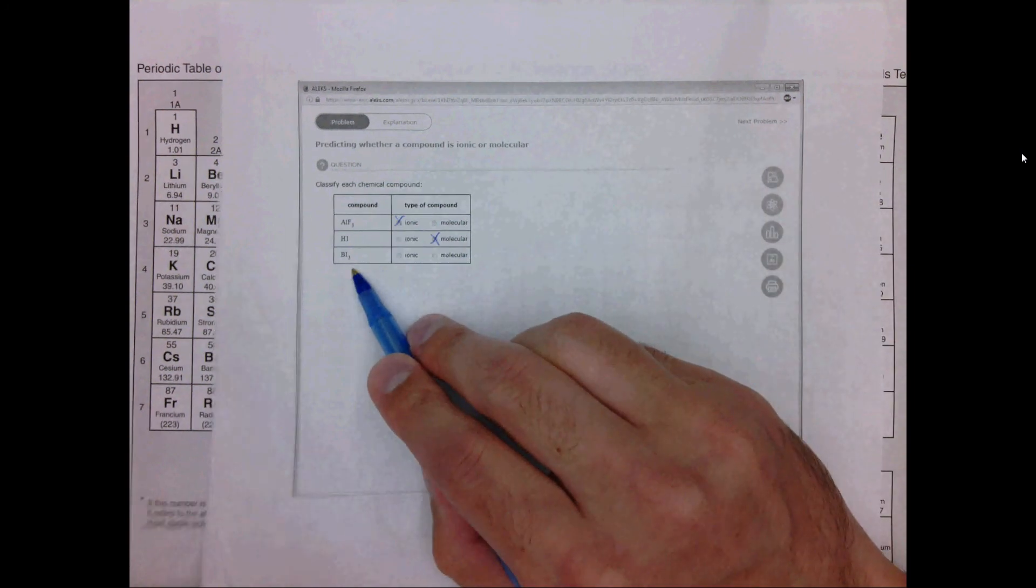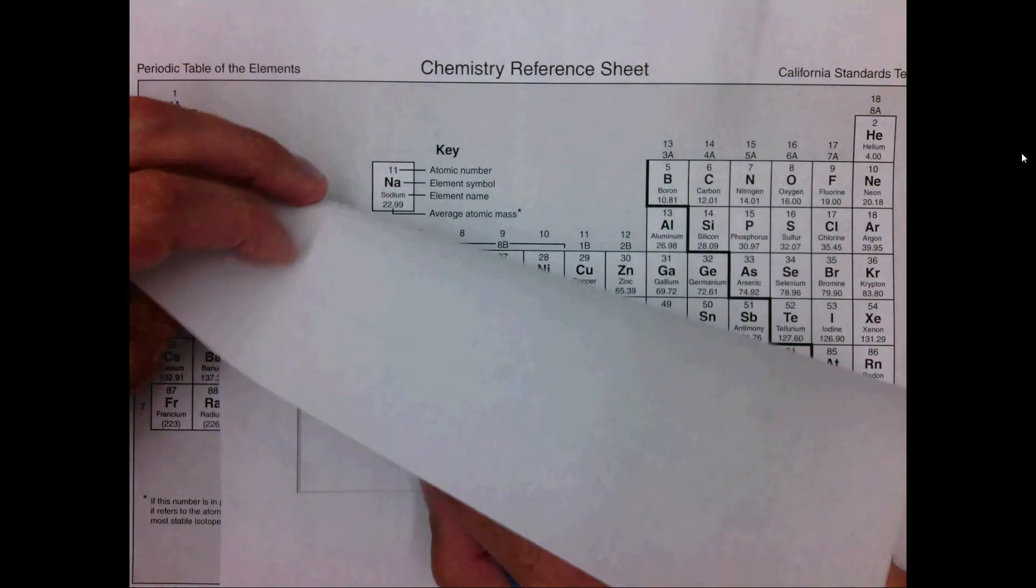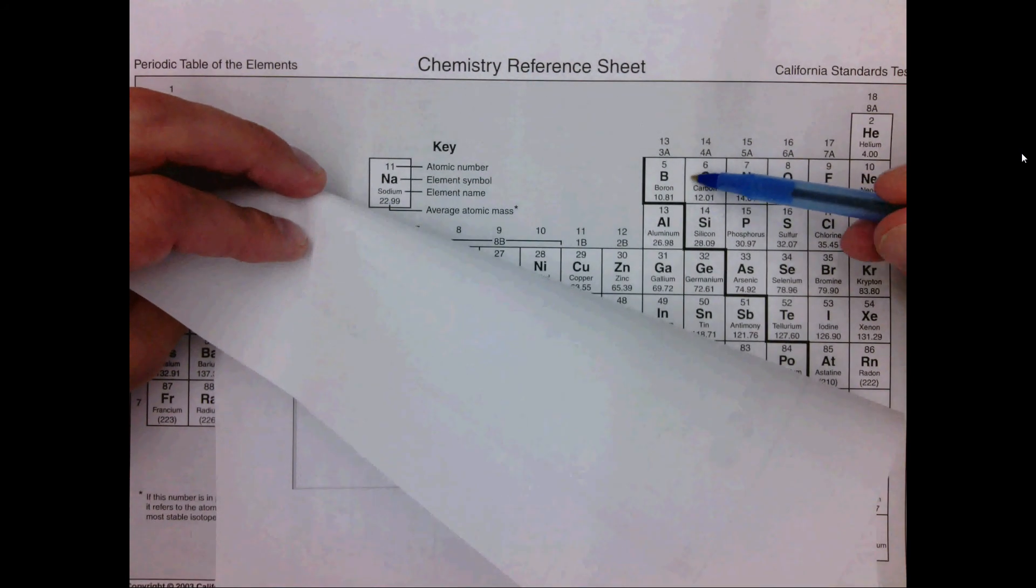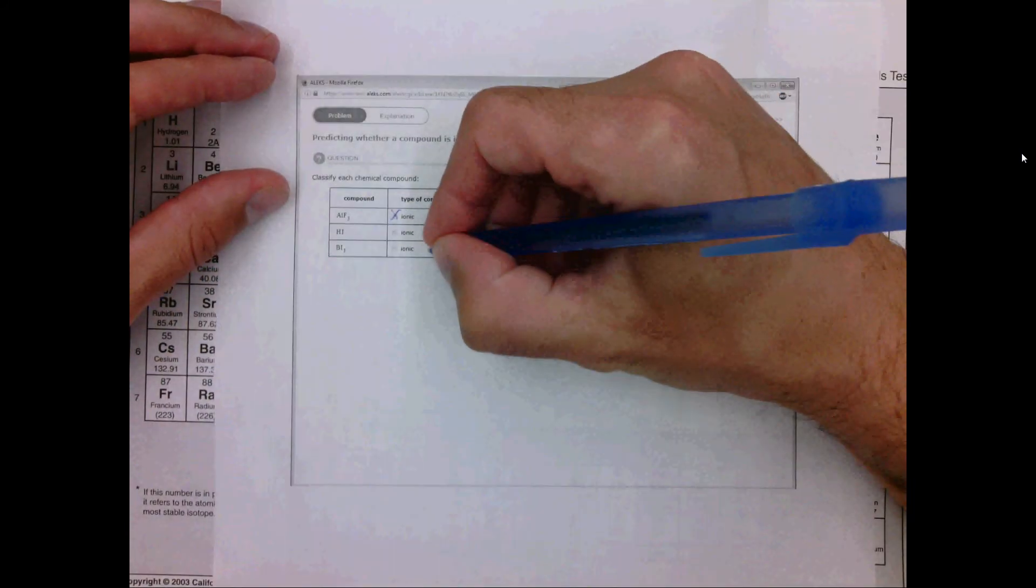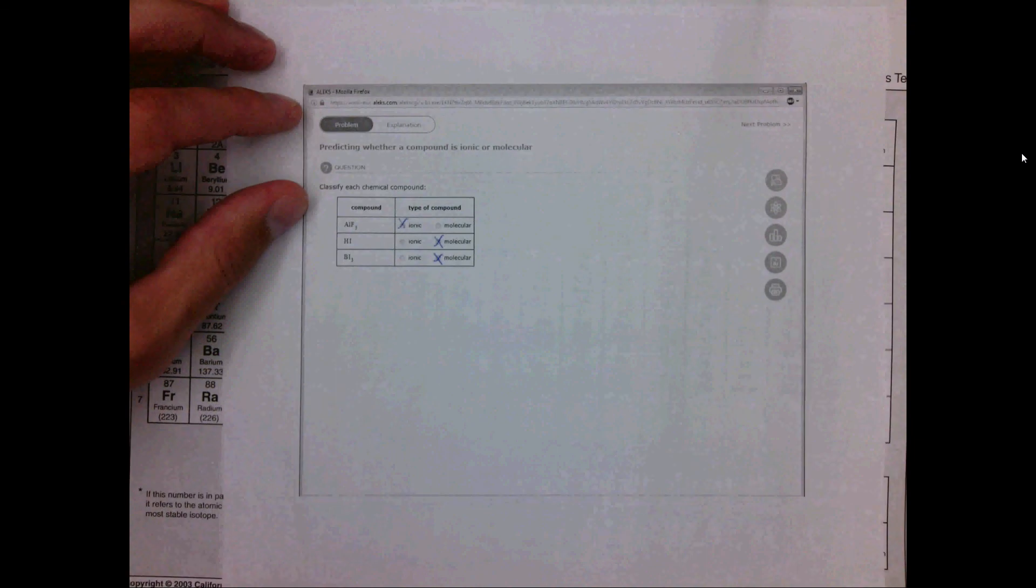BI3. Boron is a metalloid, and we consider it here as a non-metal, so this is going to be a molecular compound.